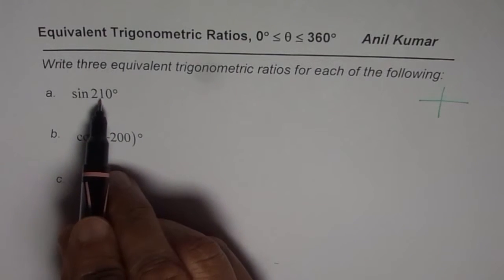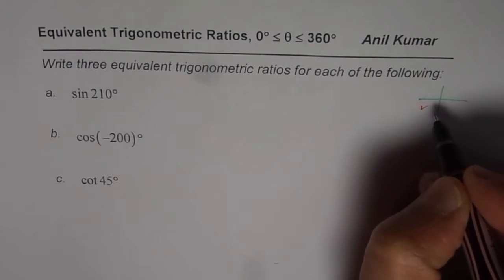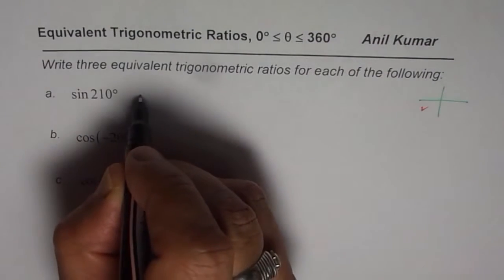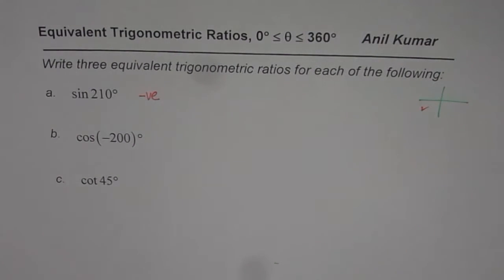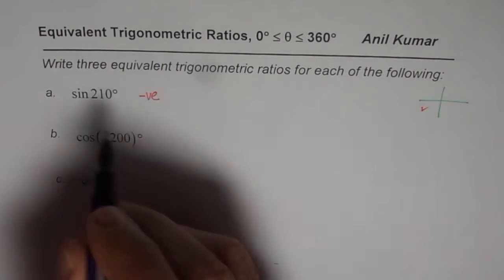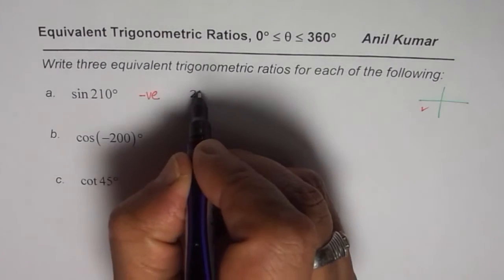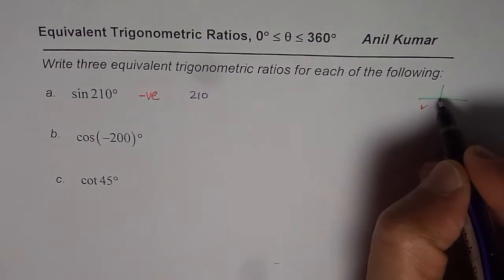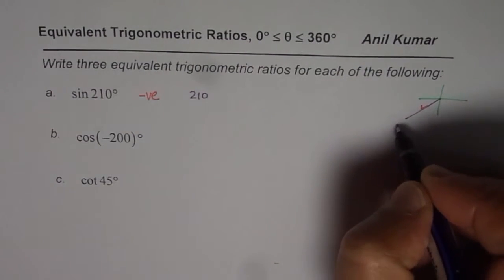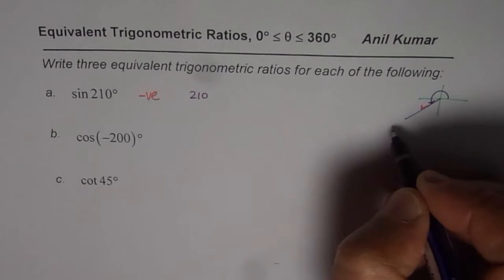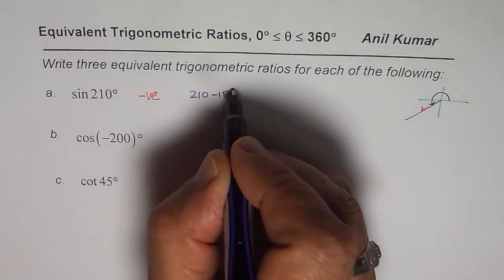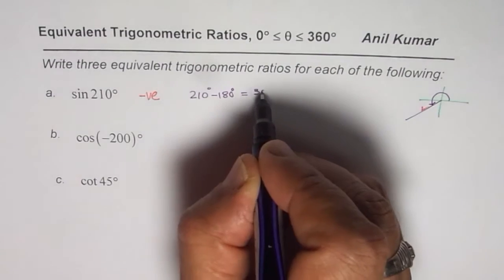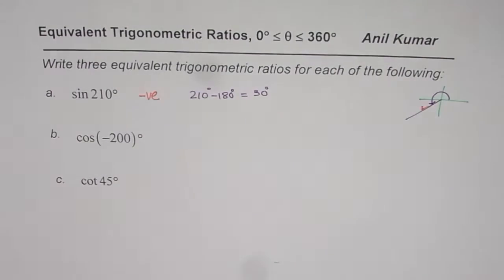Sine 210 means you are in quadrant 3. If you are in quadrant 3, you are expecting a negative value. The second thing you need to know is the related acute angle. How do you find it? 210 degrees — the acute angle with respect to the horizontal x-axis is 210 minus 180 degrees, which is 30 degrees. So the related acute angle is 30 degrees.